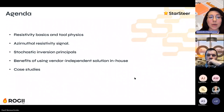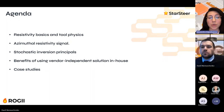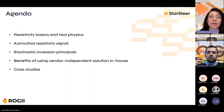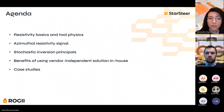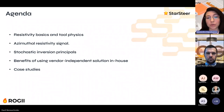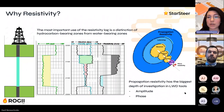Today we would like to share more about the theory of resistivity, starting from resistivity basics and tool physics. Then we'll talk about azimuthal resistivity signals and the ways to calculate inversion and interpret resistivity data. Later we will share several case studies from application of our vendor-independent resistivity and inversion calculation model that we've developed.